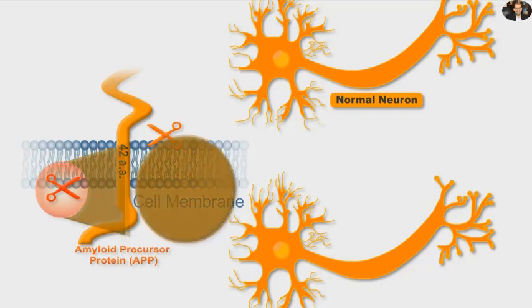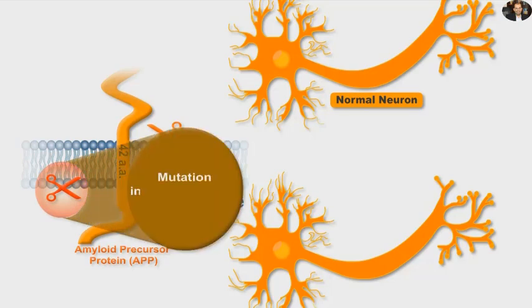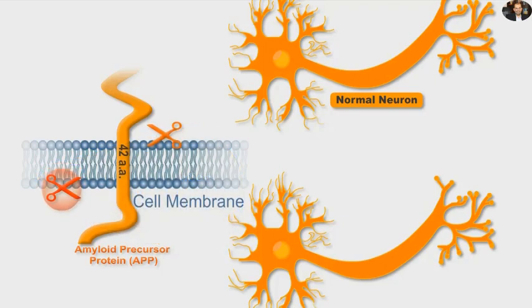However, sometimes and for unknown reasons, a mutation occurs in the gamma secretase enzyme. This mutation results in the production of 42 amino acid peptide fragments.